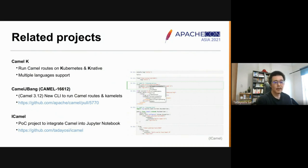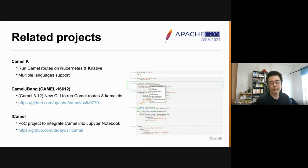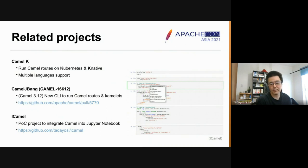And finally, iCaml is my proof of concept project. It is, in essence, a Jupyter kernel implementation for Camel. While it's still a rough cut, if you are interested in how Camel can be interacted with in a Jupyter notebook, please give it a try. Feedback is always welcome.